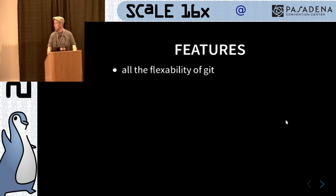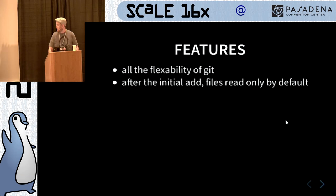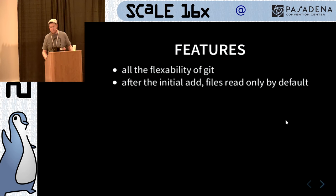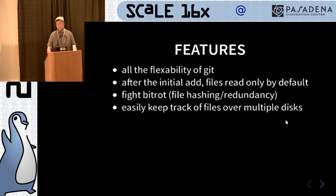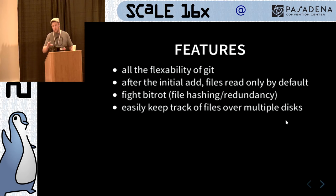Features of my Git workflow with Git Annex: it gives you all the flexibility of Git. In my own workflow, after you do a git annex add, all the files are read-only. I like this a lot because I believe you should preserve the original source — raw files don't change anyway unless you rewrite the metadata, and really if you want to do that, you should just write the sidecar. You can also fight bit rot: Git Annex hashes your files and gives you an easy way to do file redundancy. You can easily keep track of your collection over multiple disks, so if you have terabytes and terabytes of data, you can put one repo on each disk and split all your files between them.